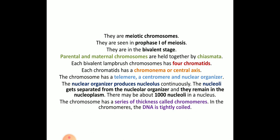Lampbrush chromosomes are mainly meiotic chromosomes, seen in prophase I of meiosis at the bivalent stage. Paternal and maternal chromosomes are held together by chiasmata. Each bivalent lampbrush chromosome has four chromatids with telomere, centromere, and nucleolar organizer regions. About a thousand nucleoli are synthesized in the nucleolar region within the nucleoplasm. The chromosome also has a series of thickened regions called chromomeres, where DNA is tightly coiled.